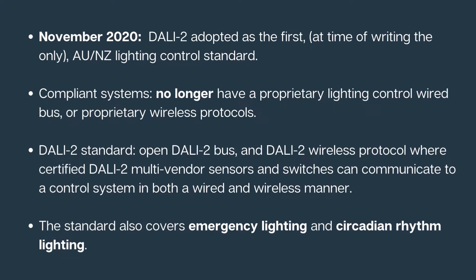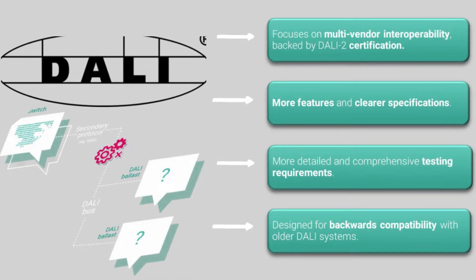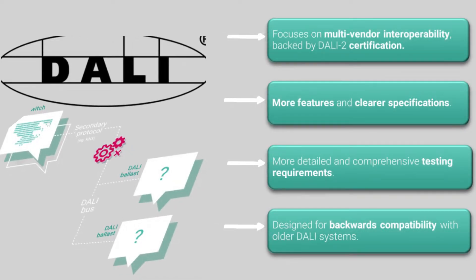Also, in addition to lighting control, the standard covers emergency lighting and circadian rhythm lighting, which is basically colour tuning. So, what is DALI 2? Simply, DALI 2 is DALI version 1 with additional features and clearer specifications.